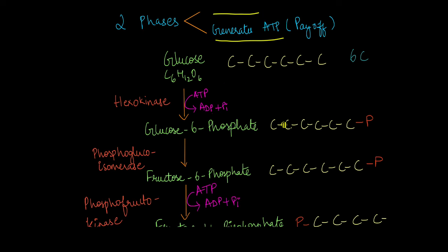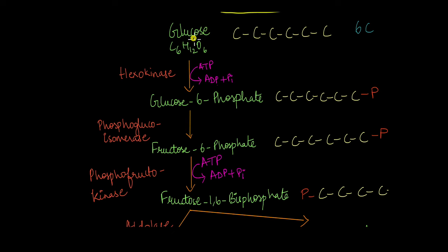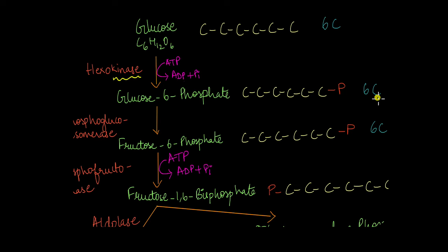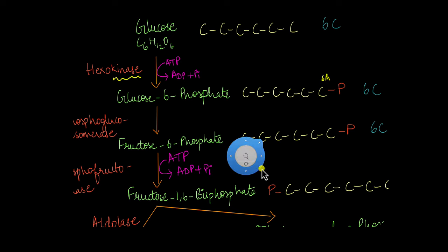The first phase begins with glucose. The enzyme hexokinase acts on glucose and, being a kinase, it is involved in the transfer of a phosphate group. With the help of ATP — where ATP is converted to ADP and inorganic phosphate — hexokinase adds this phosphate group to glucose, converting it to glucose-6-phosphate. Glucose-6-phosphate is still a 6-carbon compound; it just has a phosphate group attached at the 6th carbon position.